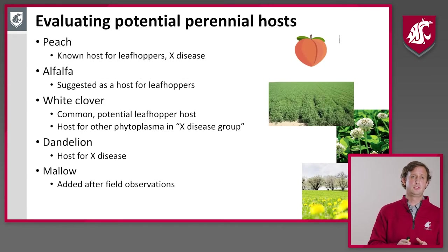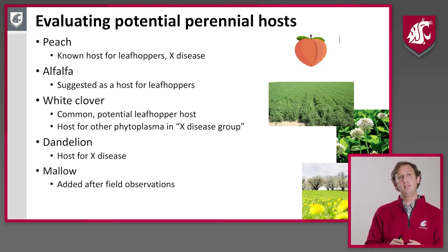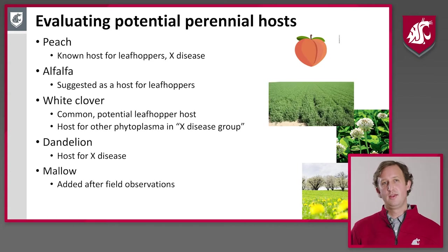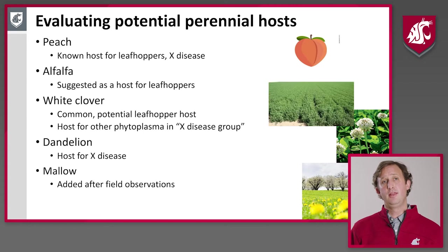Another key point is that phytoplasma is not transmitted from leafhopper generation to generation, nor from plants via pollen or seeds. Leafhoppers overwinter as eggs, which means a leafhopper is not able to carry phytoplasma from one year to the next. The only thing that can carry phytoplasma from one year to the next is perennial plants, because the roots of a perennial plant can host the phytoplasma over winter. This shows how important perennial plants are, and is one reason why tree removal is absolutely critical.